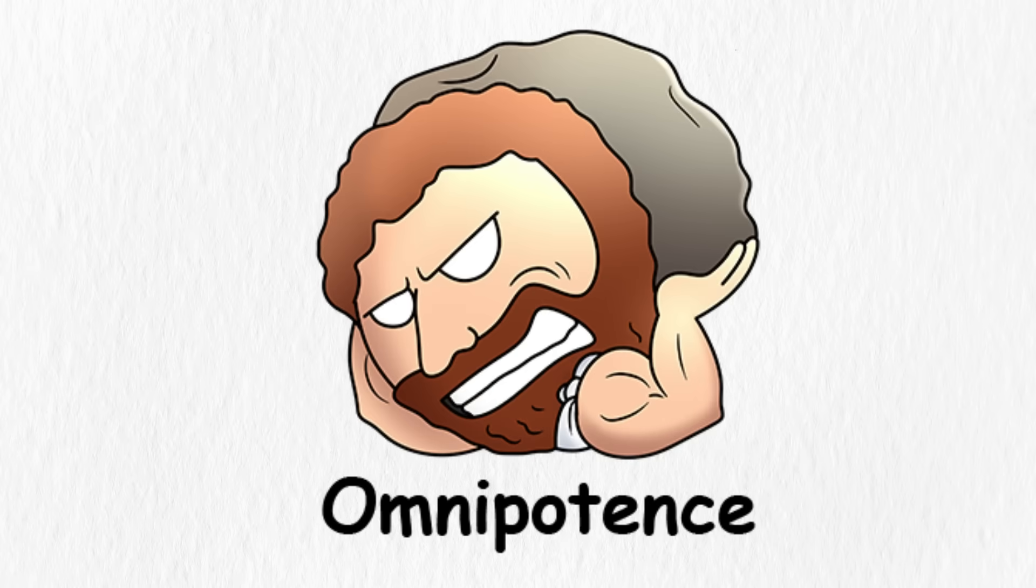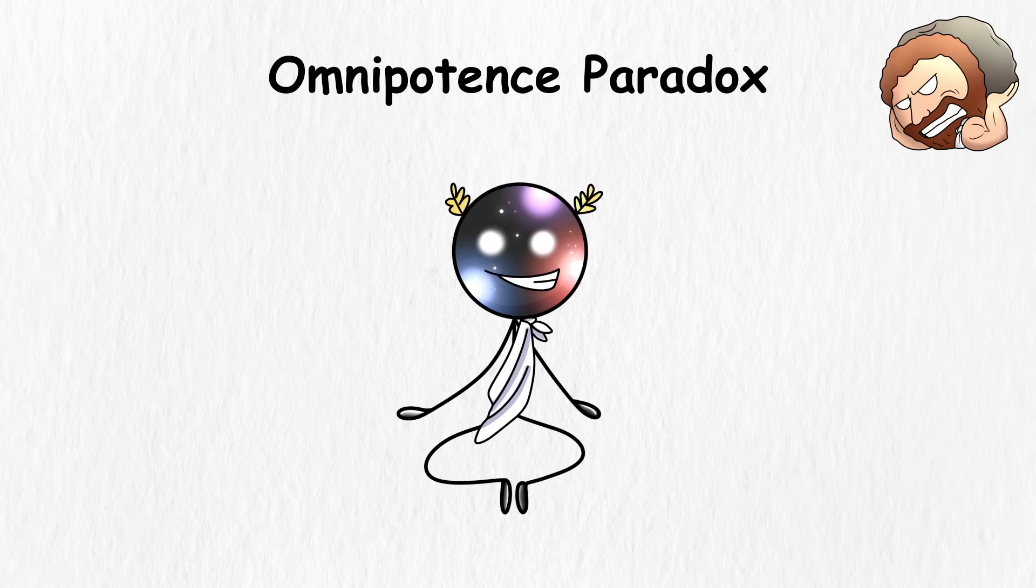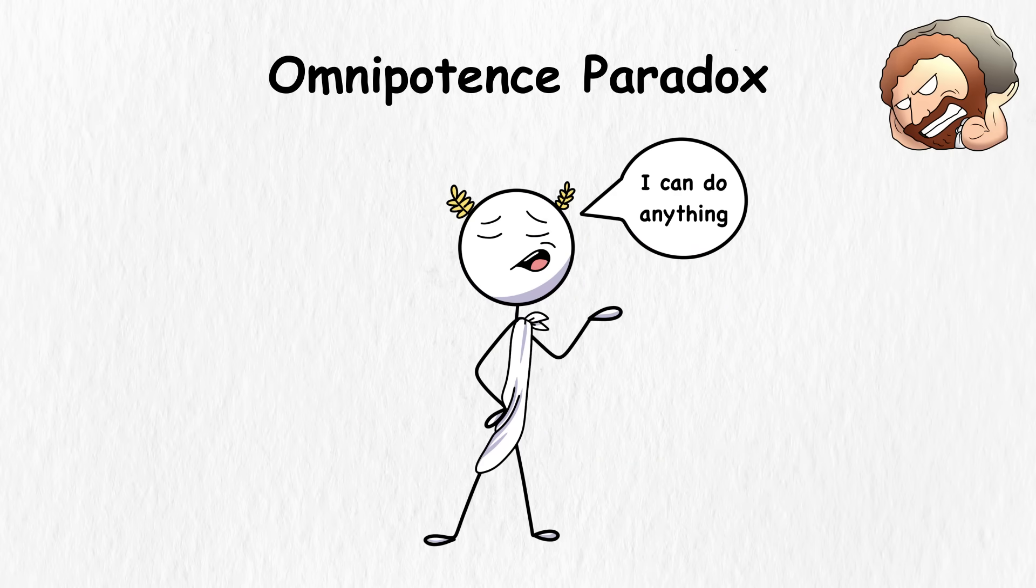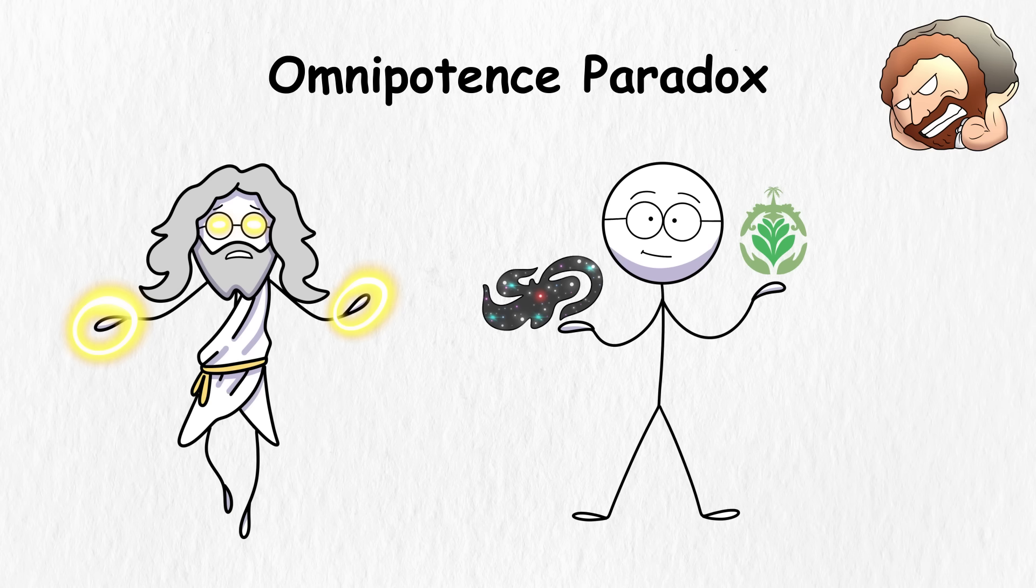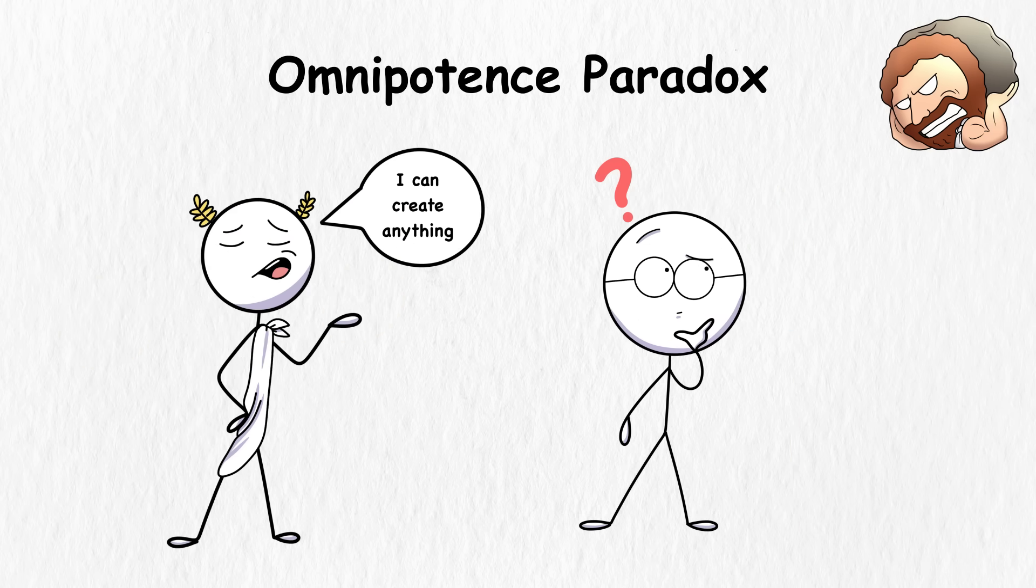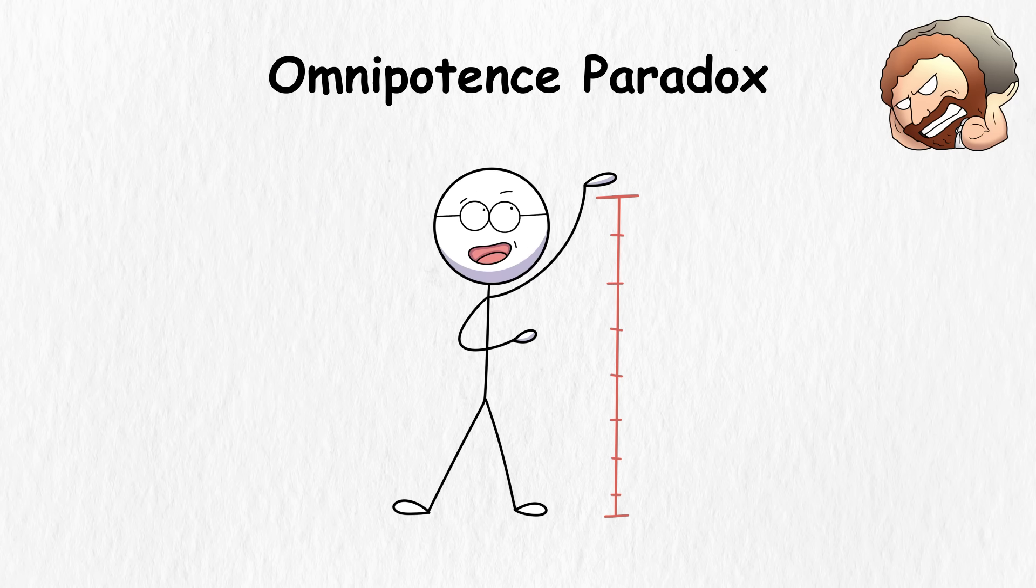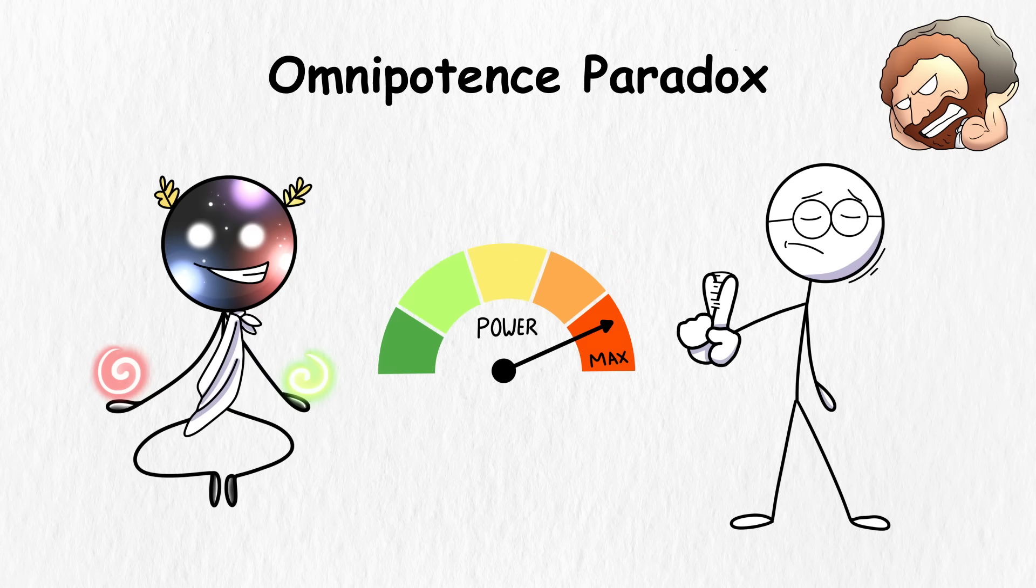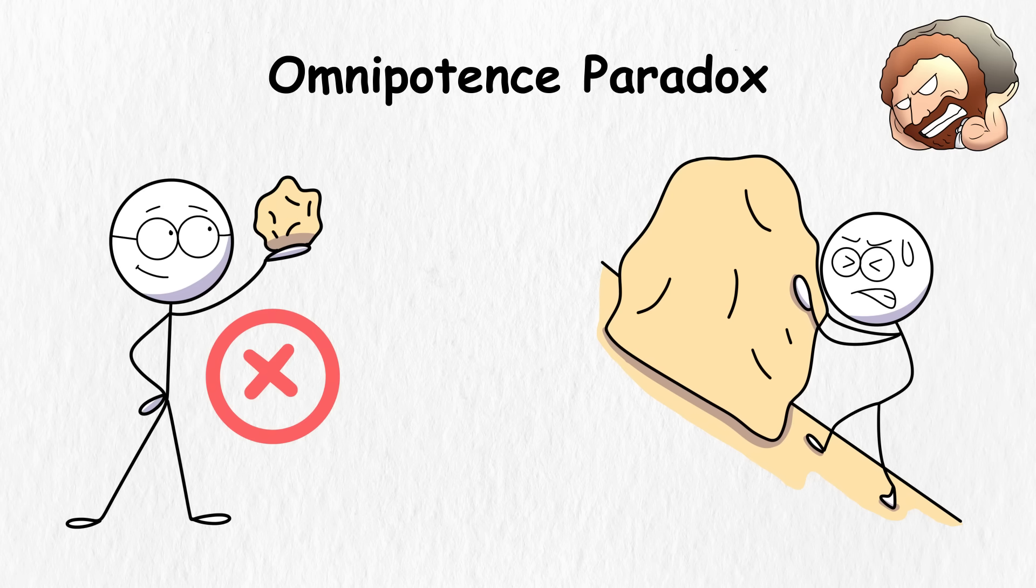Omnipotence Paradox. You've got this cosmic hotshot claiming he can do anything, like a true god. He creates the galaxy, and everything in it. But if this being is so great that he can create anything, you'd be wondering if he can create something so extreme that not even he, with all his omnipotent powers, can handle it. A rock that's so heavy that no one can lift it.